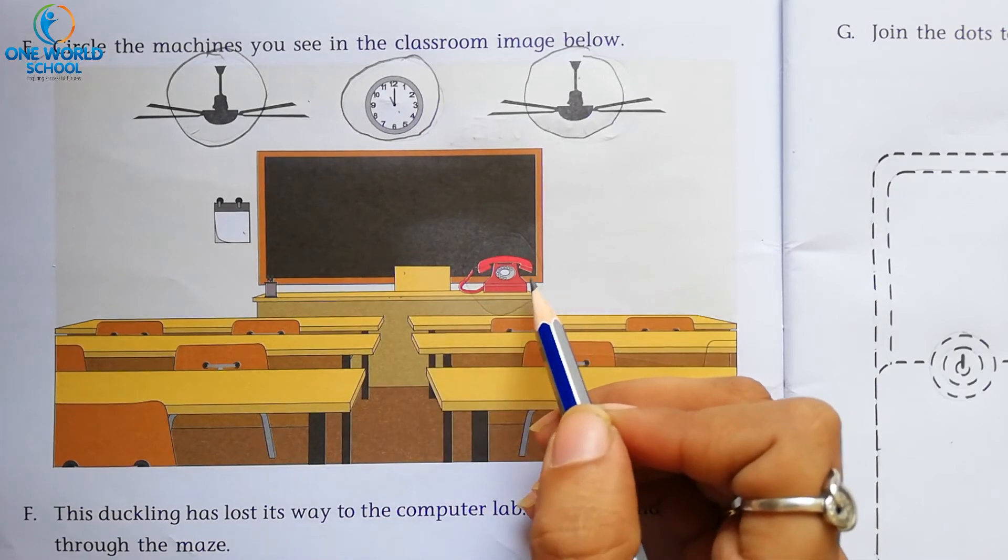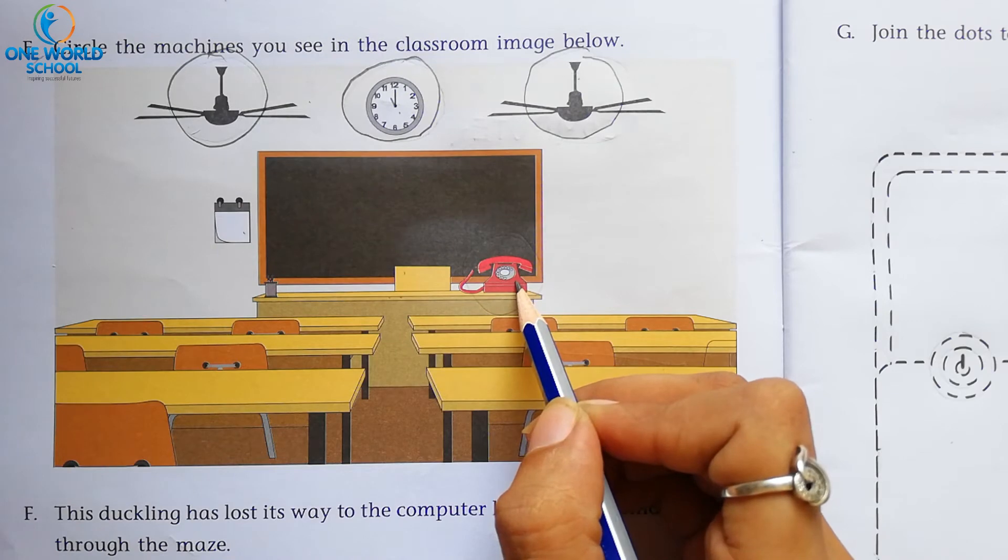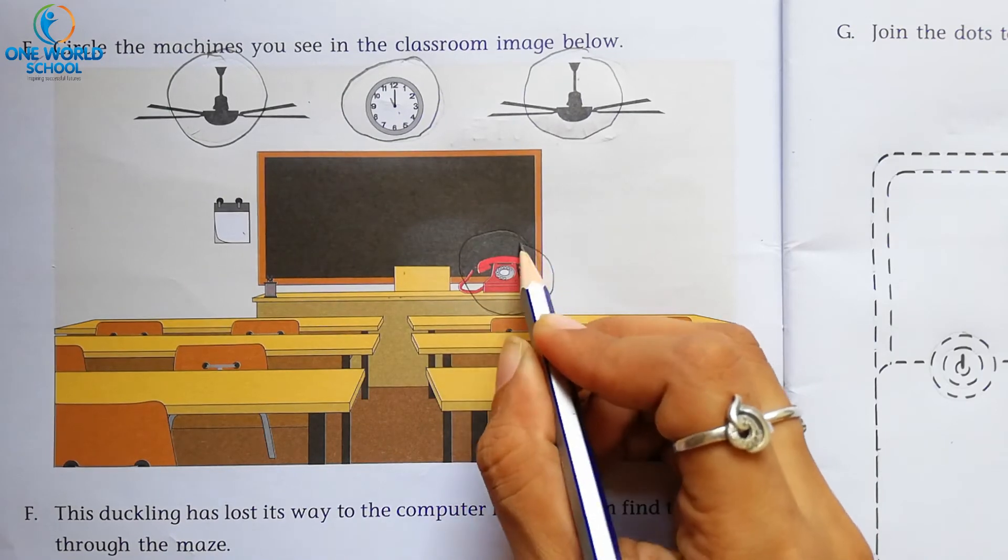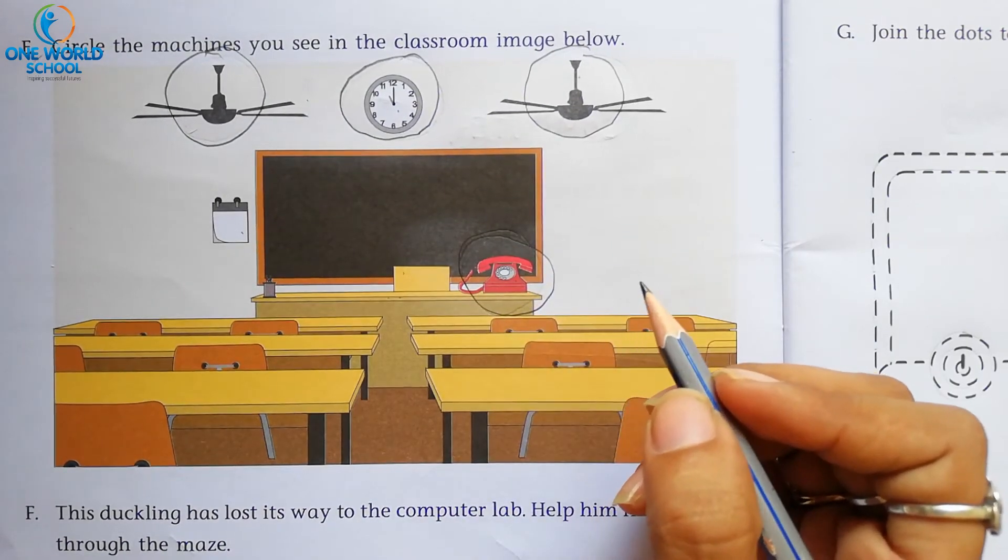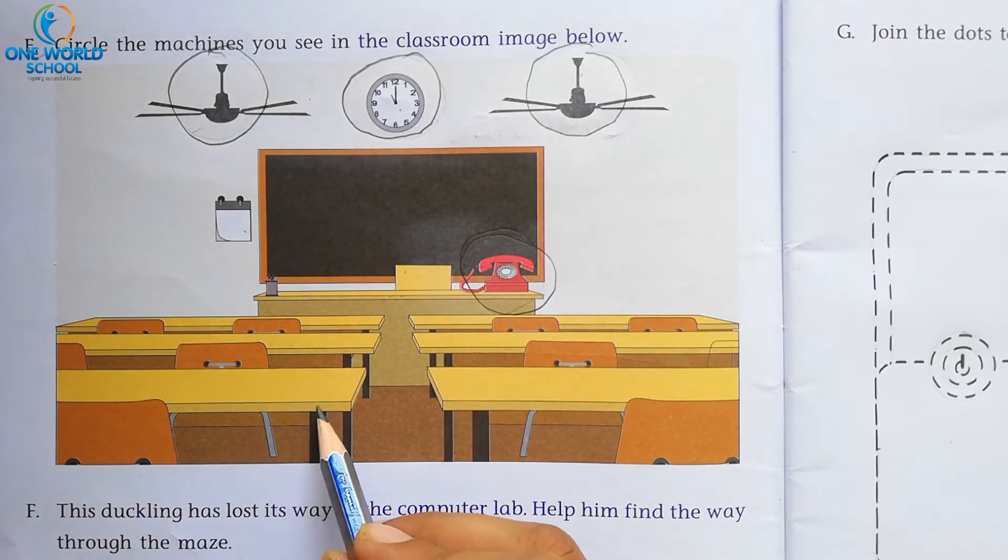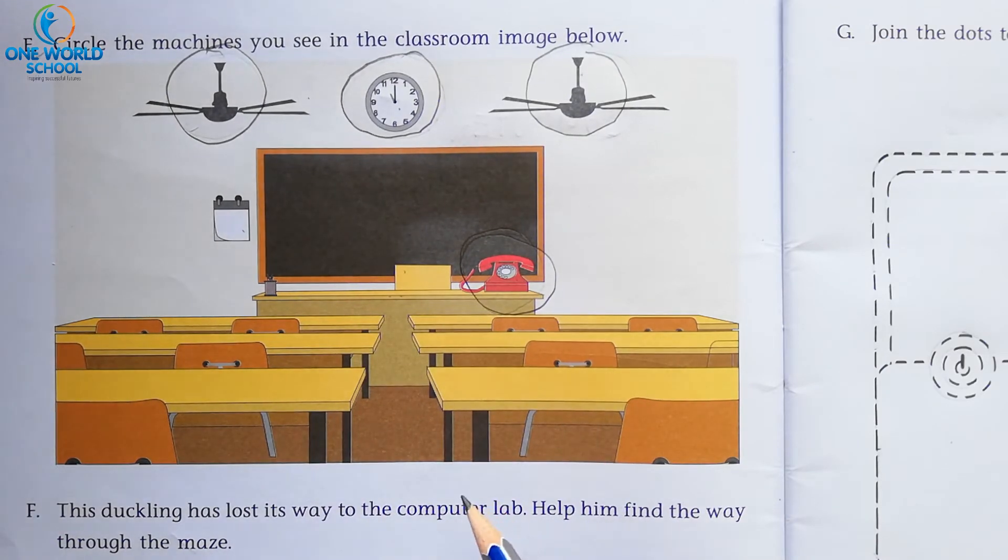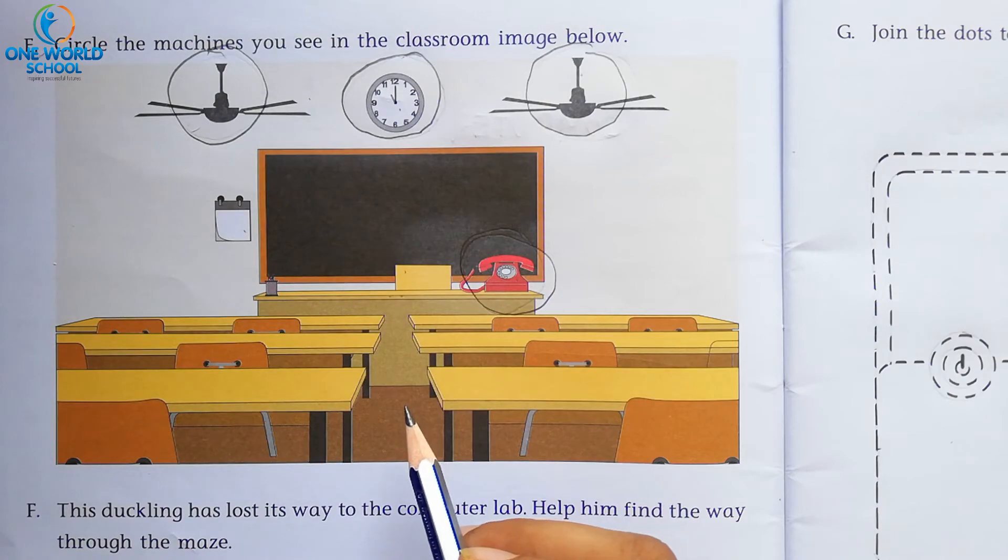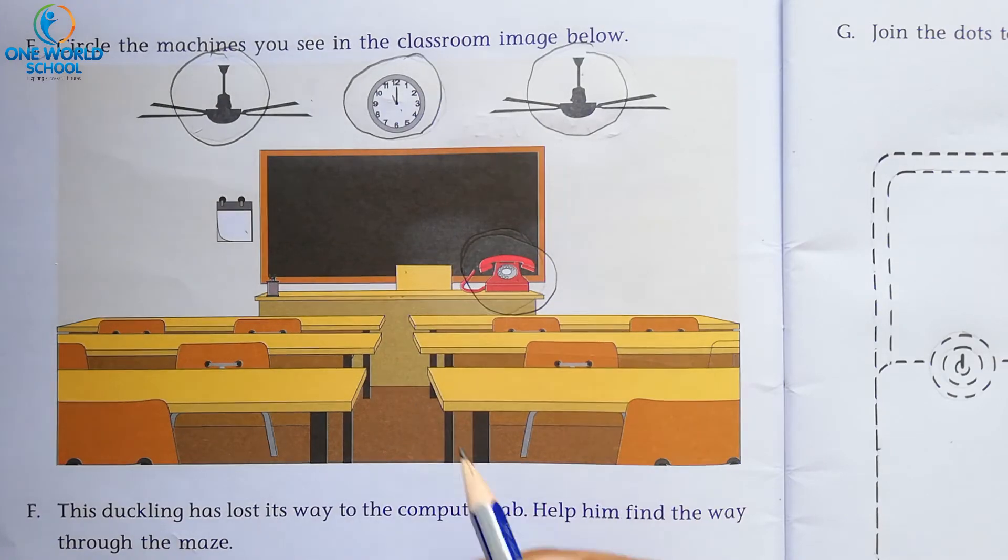Next one. Telephone. Telephone machine is not. Yes. Then we have to circle on it. Okay. Next. Benches. Benches is not. Yes. So, we don't circle on it.